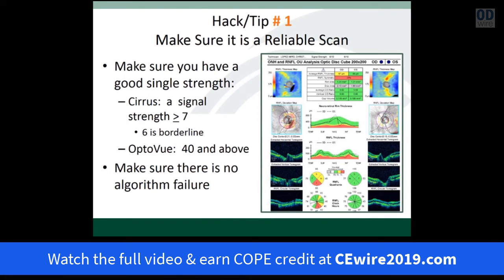Hack tip number one: make sure it's a reliable scan. We're looking at a Cirrus OCT here. The first thing to look at — whether it's a Cirrus, OptiView, or any technology — is signal strength. On the Cirrus in particular, a signal strength of at least seven or over is important. A six I would consider borderline. When deciding if a patient has glaucoma or identifying progression over time, it becomes more important to have a good, reliable scan.